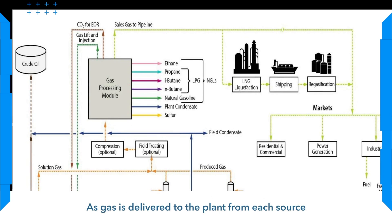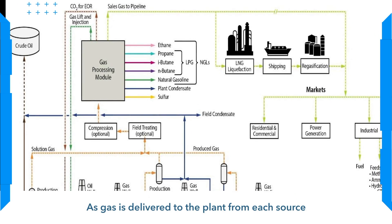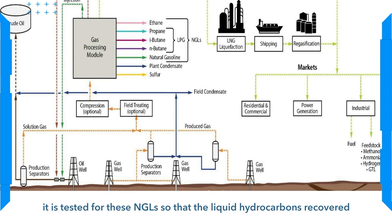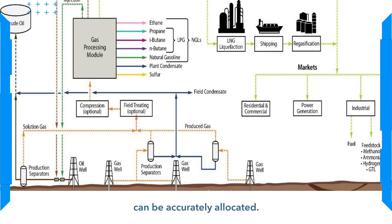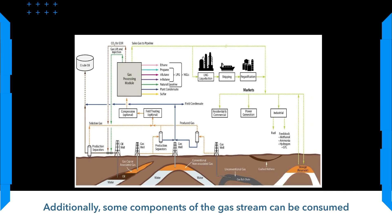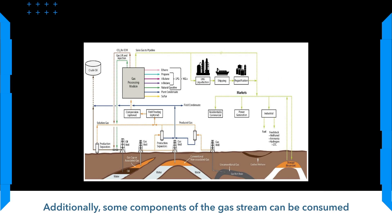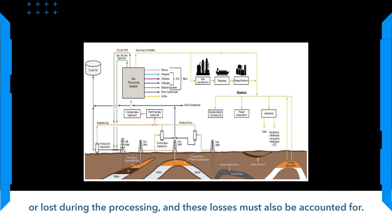As gas is delivered to the plant from each source, it is tested for these NGLs so that the liquid hydrocarbons recovered can be accurately allocated. Additionally, some components of the gas stream can be consumed or lost during the processing, and these losses must also be accounted for.